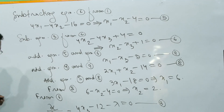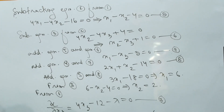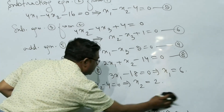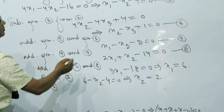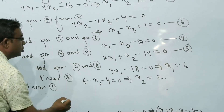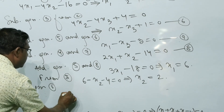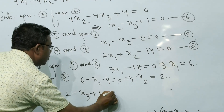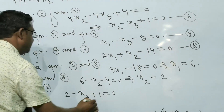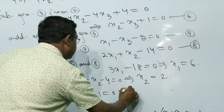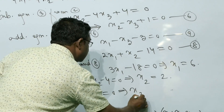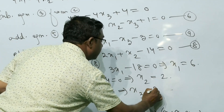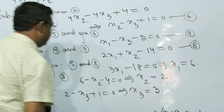From equation 6, putting x2 = 2: 2 − x3 + 1 = 0, so x3 = 3.